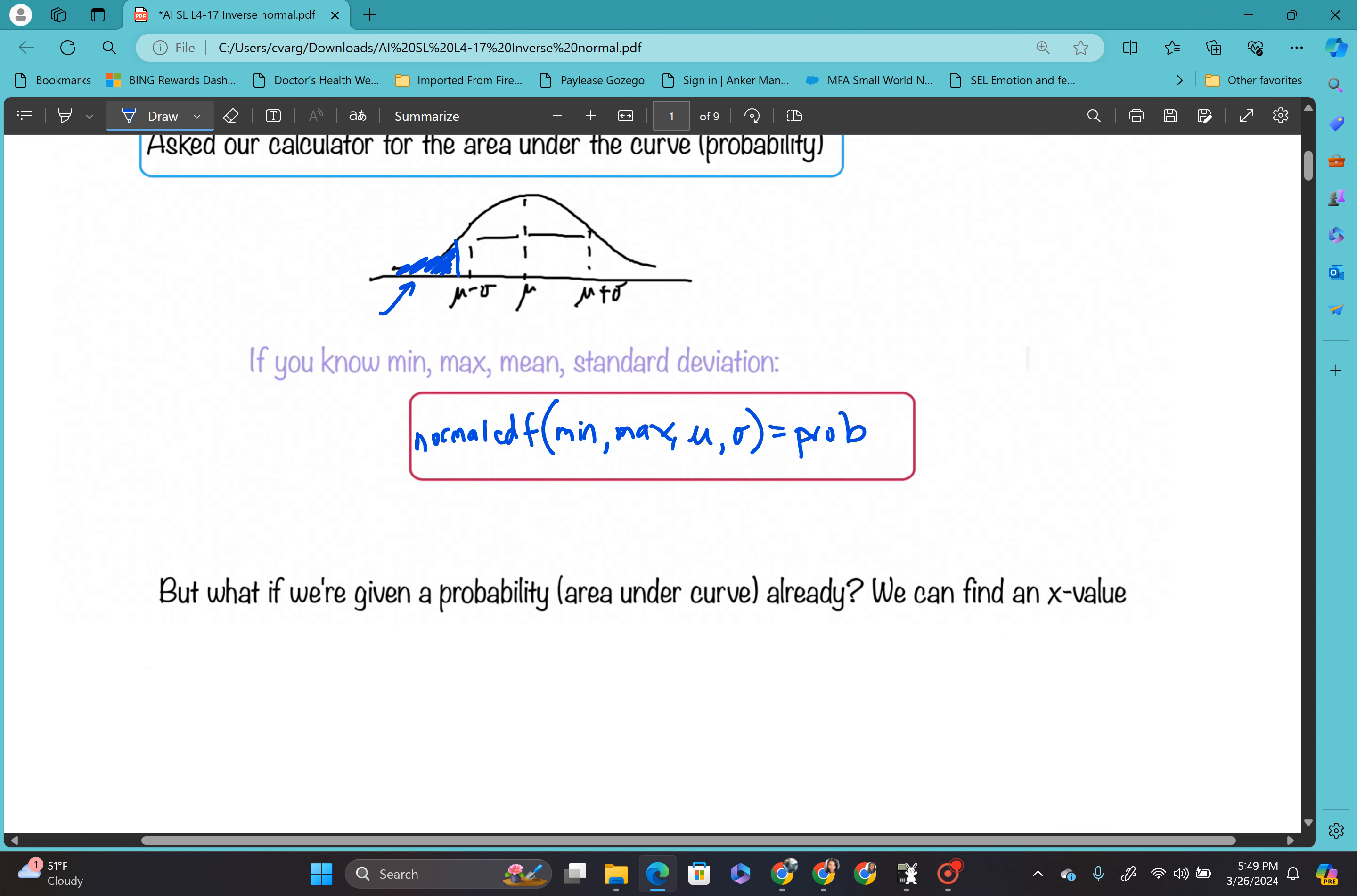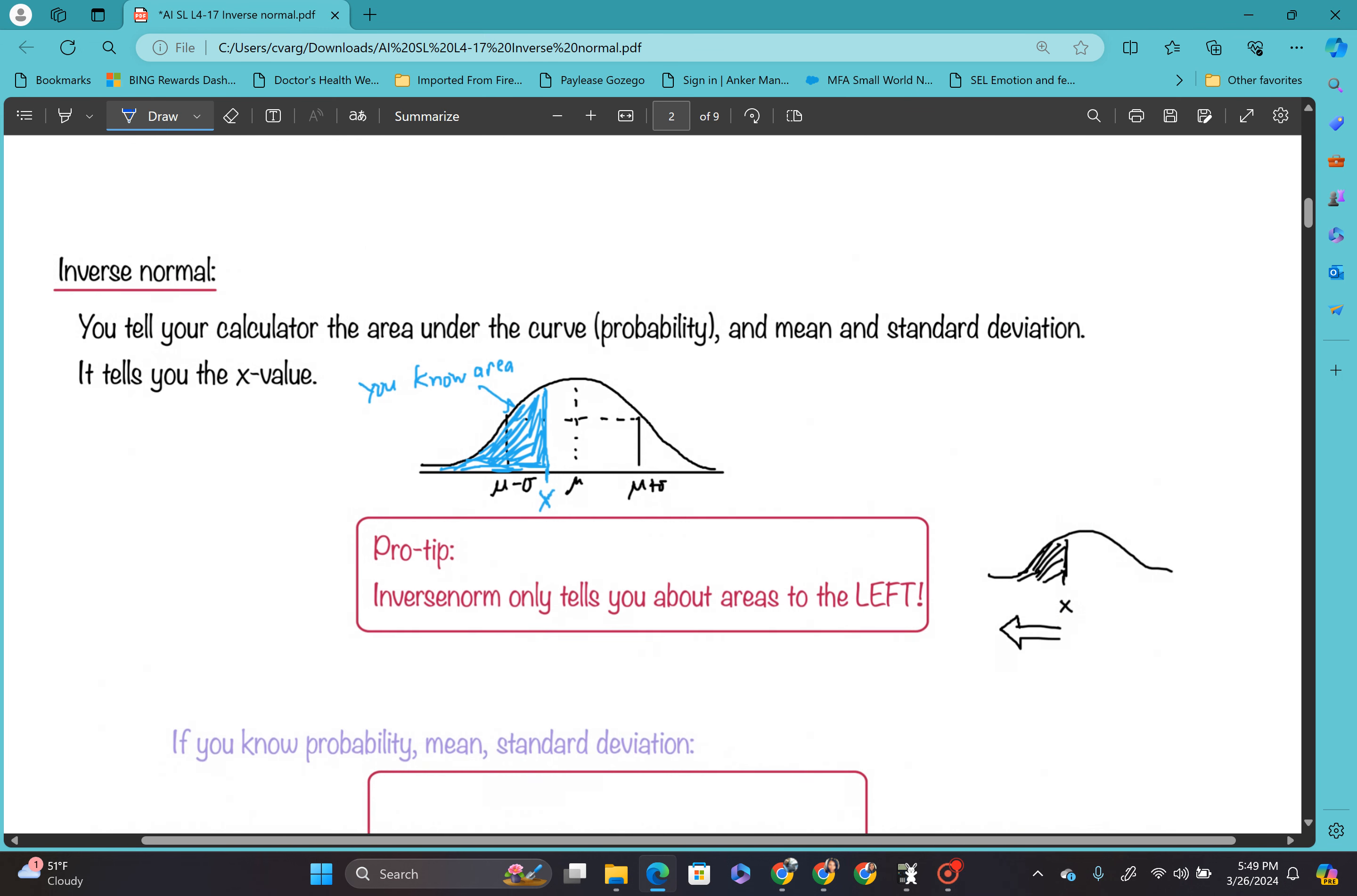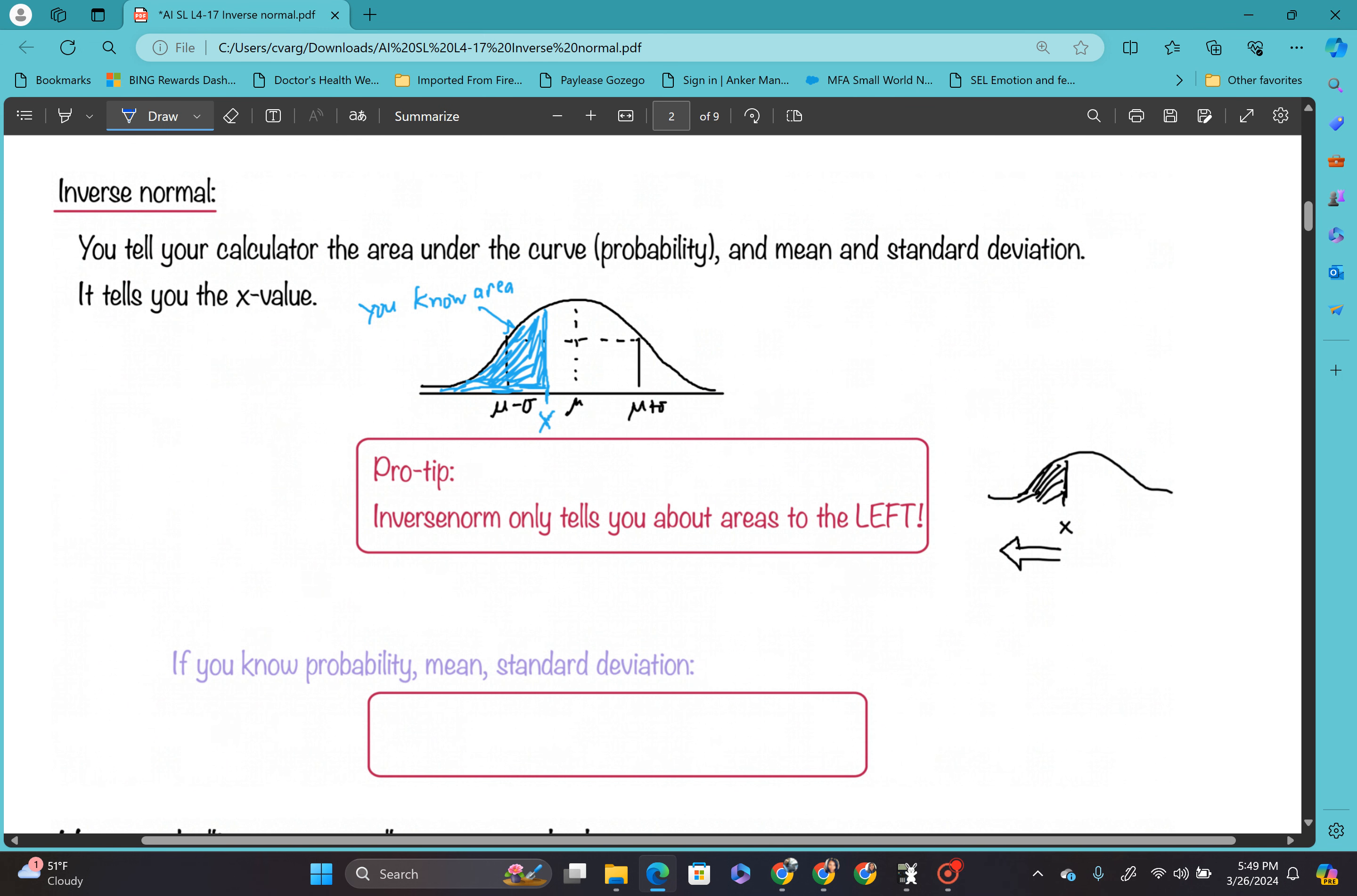So what if we don't have that? What if we have the probability? Then you can find the actual value, like where it is that you're on the normal curve. So we're going to do that with a function called inverse norm. Inverse means that you're doing the opposite.